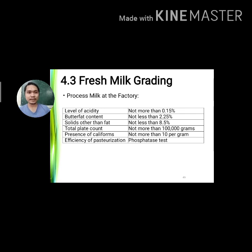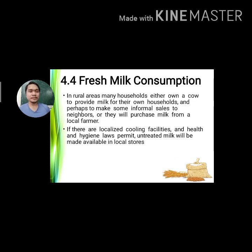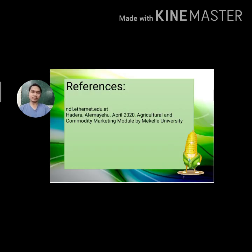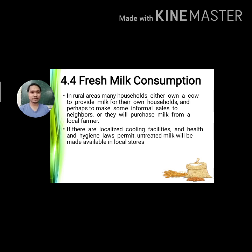For fresh milk consumption in rural areas, many households either own a cow to provide milk for their own household and perhaps make informal sales to neighbors, or purchase milk from a local farmer. If localized chilling facilities and health and hygiene laws permit, untreated milk may be available in local stores. To summarize, the four types of agricultural commodity marketing are: grain marketing, livestock and meat marketing, poultry and egg marketing, and fresh milk marketing.